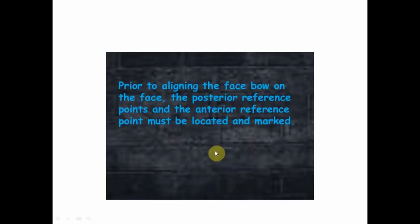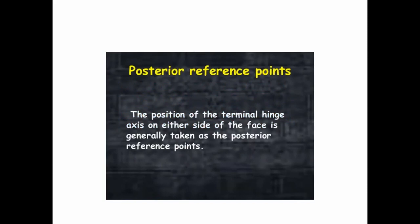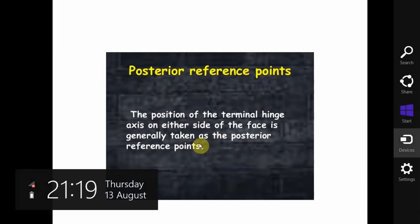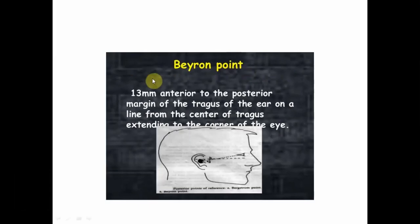Prior to aligning the facebow on the face, posterior and anterior reference points must be located and marked. The posterior reference points: the position of the terminal hinge axis on either side of the face is generally taken as the posterior reference point. One such point is Beyron's point, which is 13 millimeters anterior to the posterior margin of the tragus of the ear on a line from the center of the tragus to the corner of the eye — this is the cantho-tragal line.